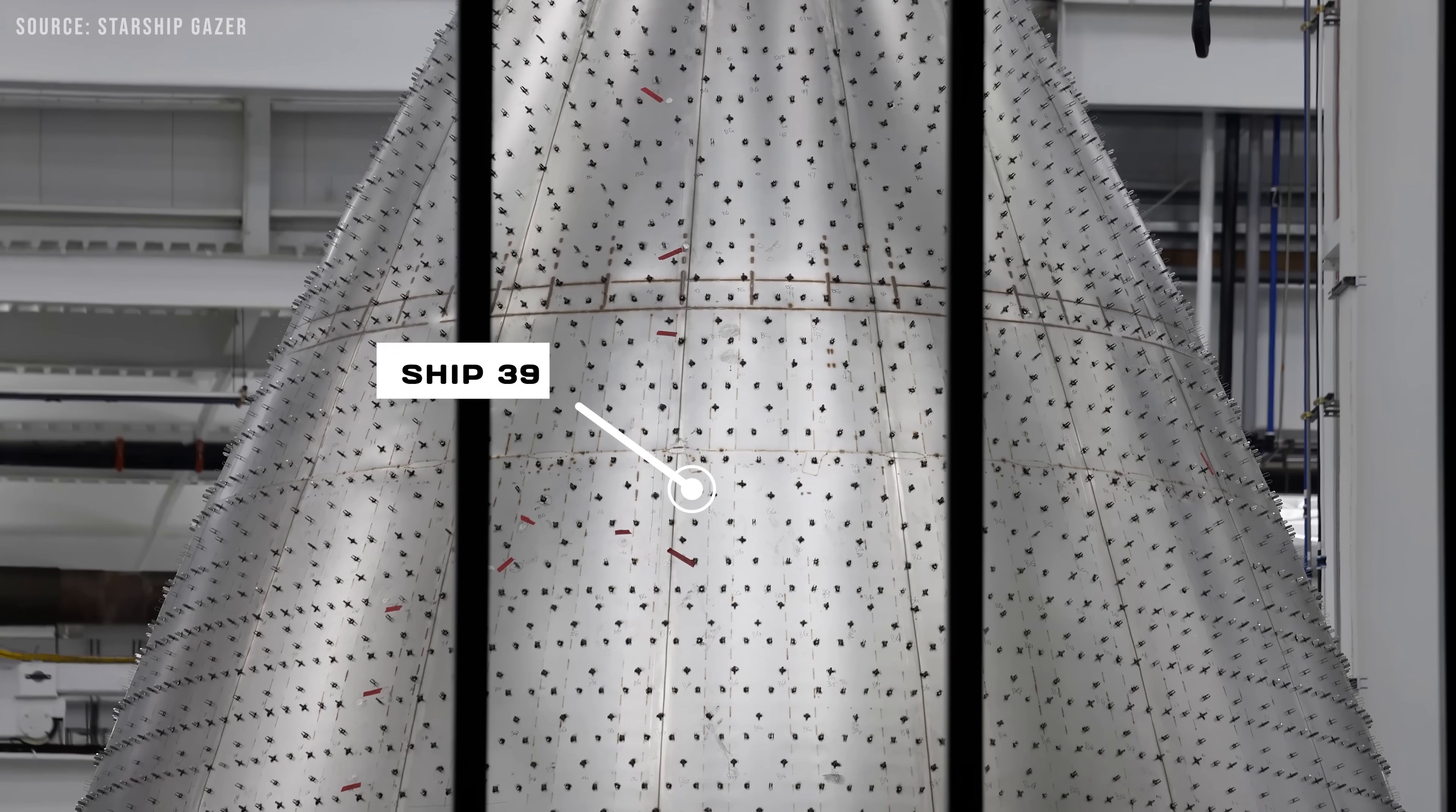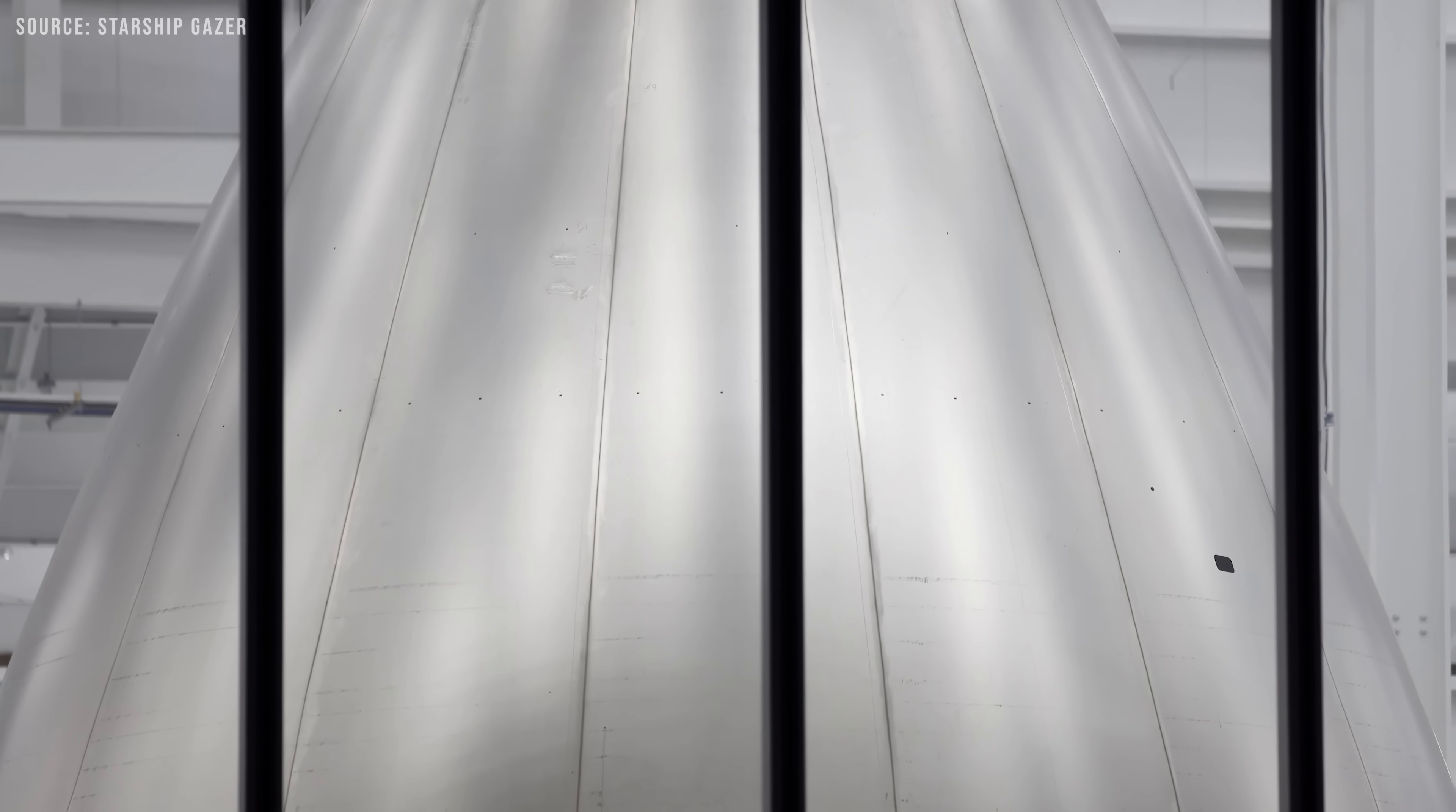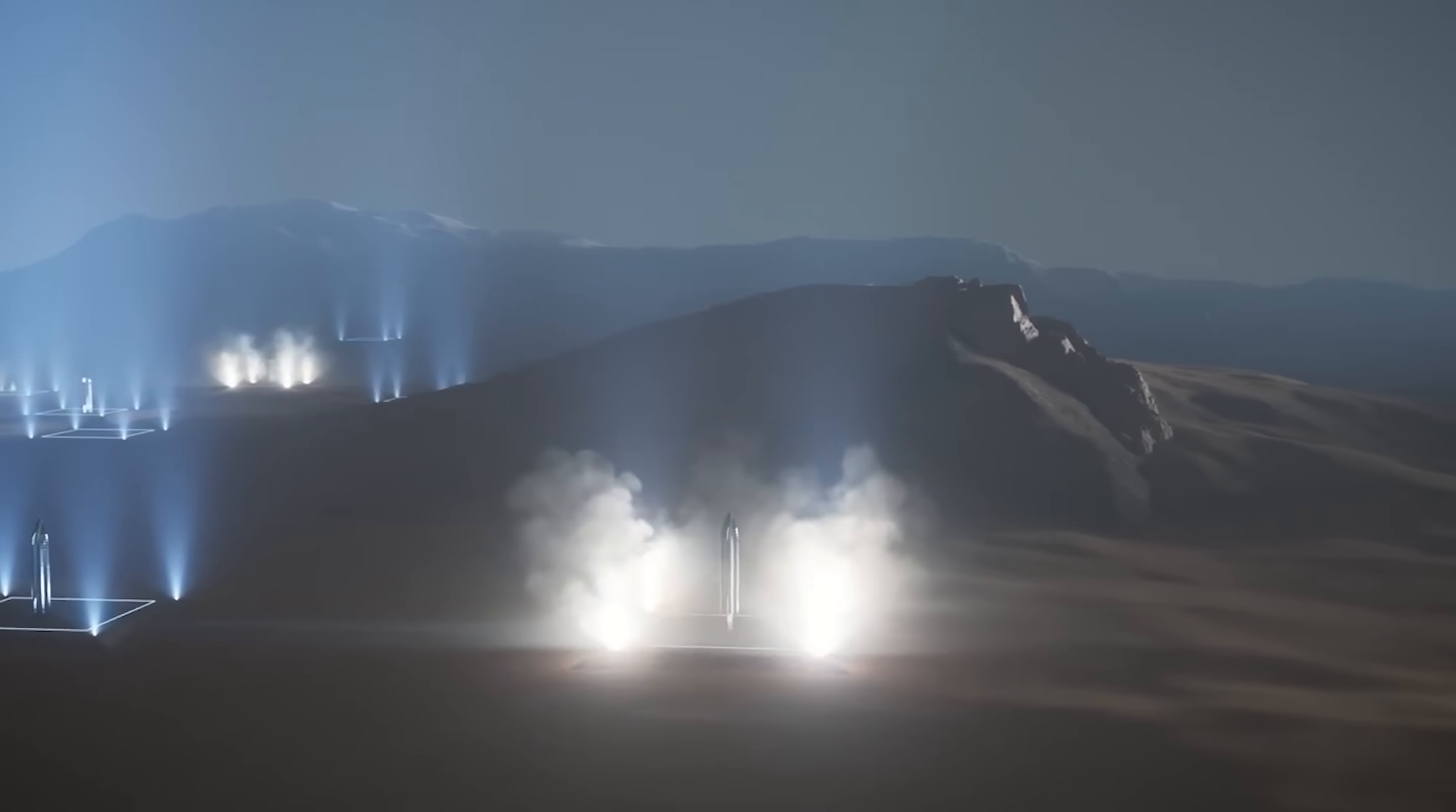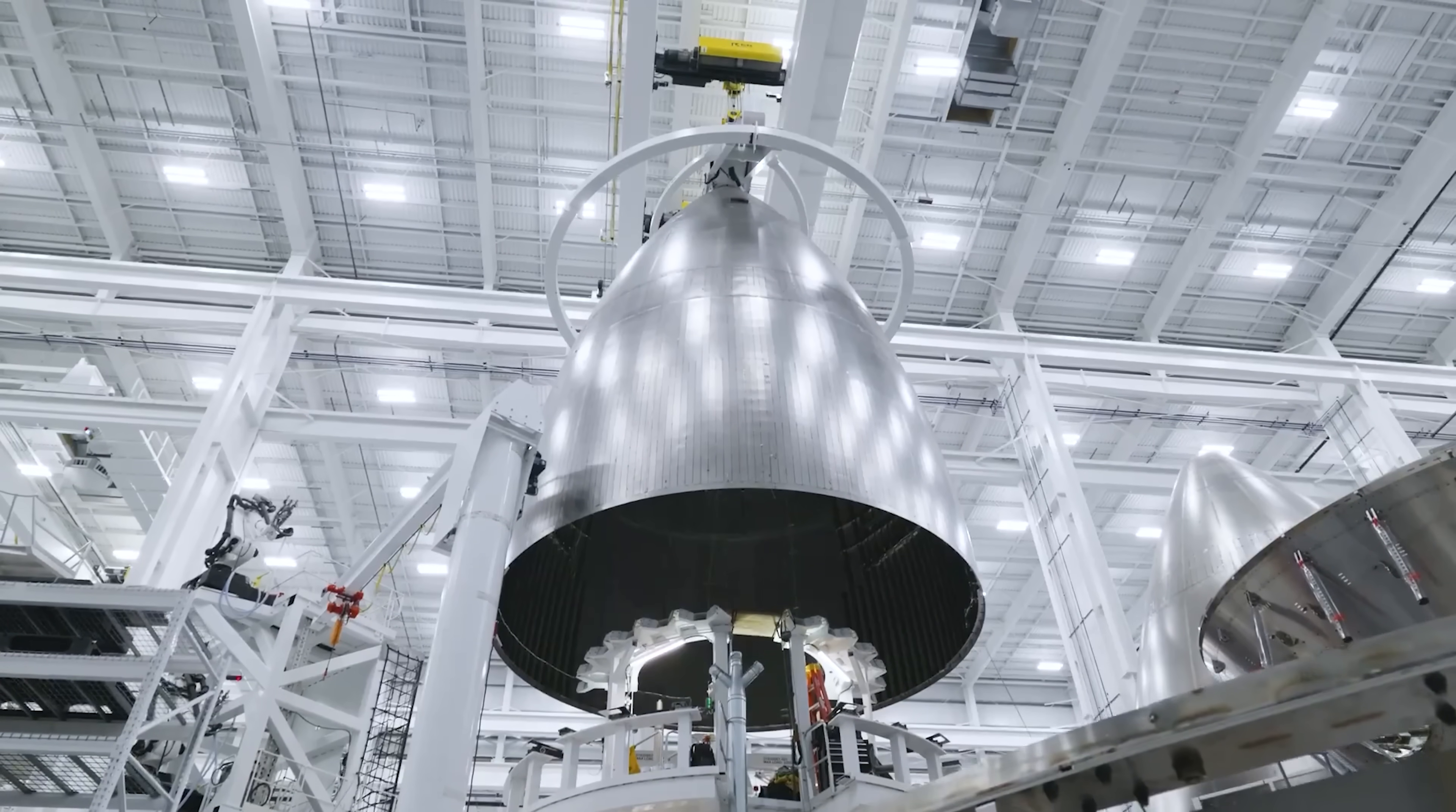Recently, several Starship Version 3 nosecones have been spotted at the Star Factory. These components are part of the latest iteration of SpaceX's Starship, which is expected to be among the first to make the journey to Mars. So what makes these new nosecones so special? Let's take a closer look.